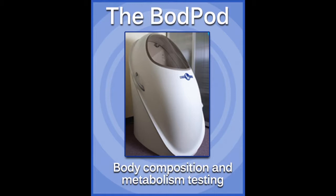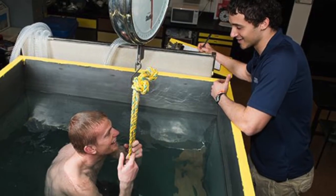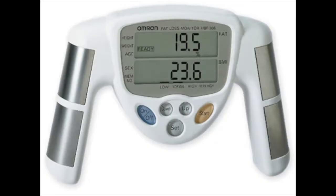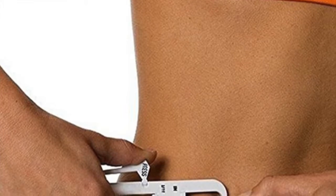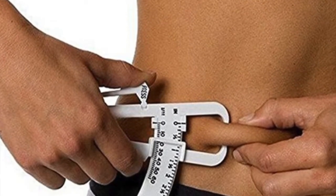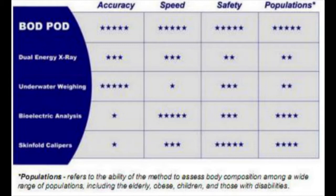Other methods of measuring body composition do exist. Some of these methods include hydrostatic weighing, electrical impedance, dual energy x-rays, and skin calipers. However, the Bod Pod is more accurate and gives more information than portable devices like electrical impedance and skin calipers, more comfortable than hydrostatic weighing because you don't have to be submerged in water, and more safe than dual energy x-rays because there's no unnecessary exposure to radiation.